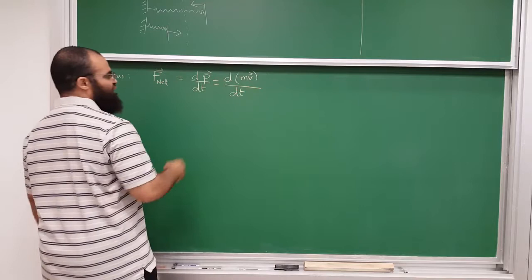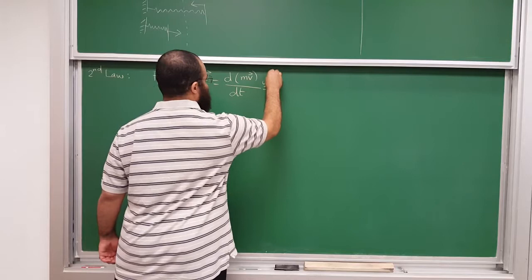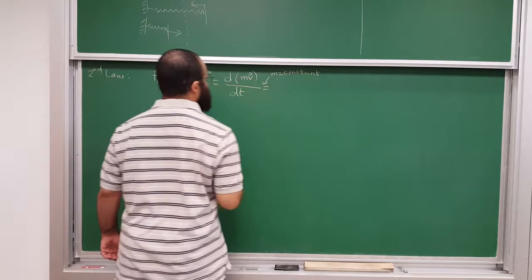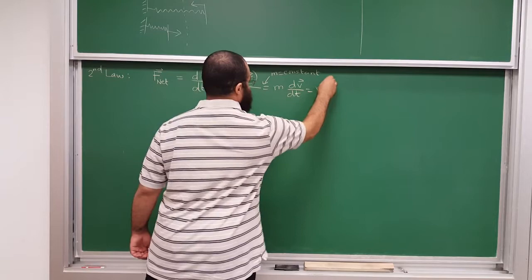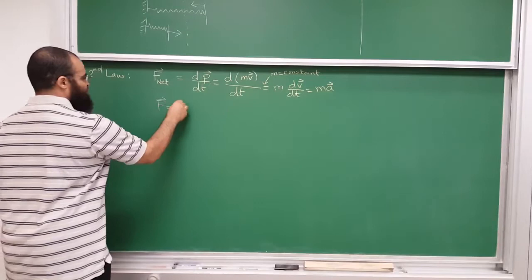If the mass is constant, then you have the following: the m comes out, and you have dv/dt. And dv/dt is the acceleration, so you have ma. So this is the more familiar form where you get F equals ma.